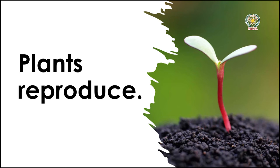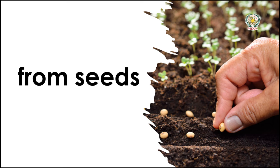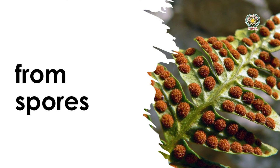Plants reproduce in various ways: from seeds, from spores, and from different parts of the plants. Keywords: seeds, spores, reproduction, and different parts of the plants.